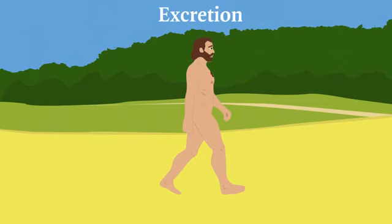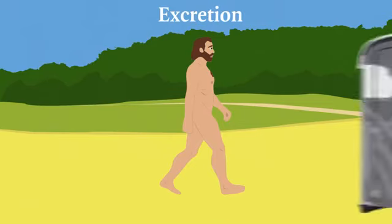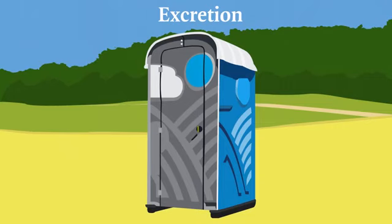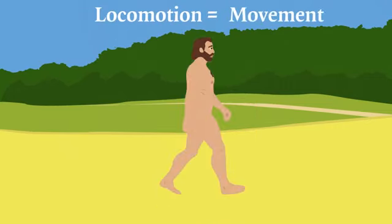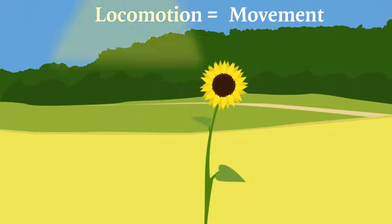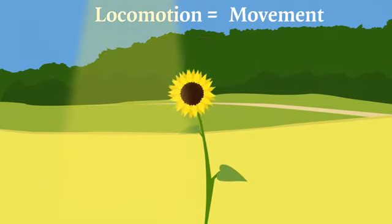There's excretion. The metabolic activities in our bodies generate waste products that we have to get rid of. There's locomotion, or movement. In order to carry out activities, living things have to move around in a controlled way. Even plants move slowly in order to face the sun better.